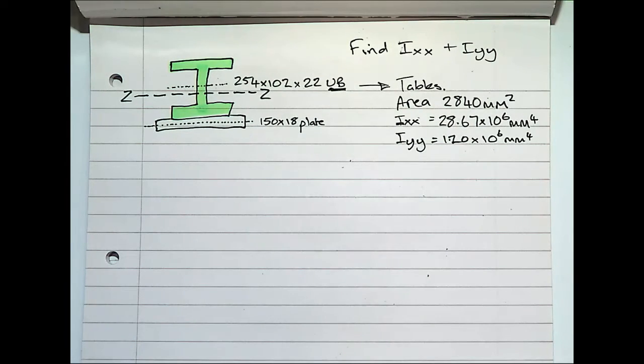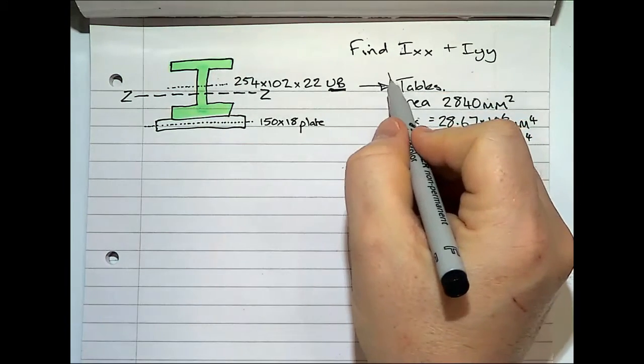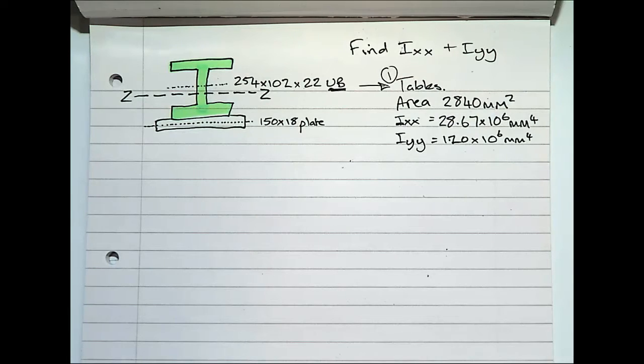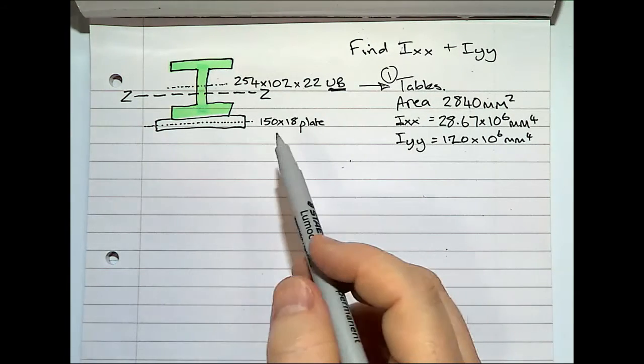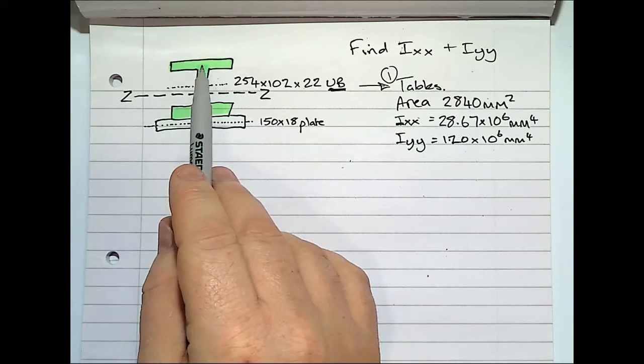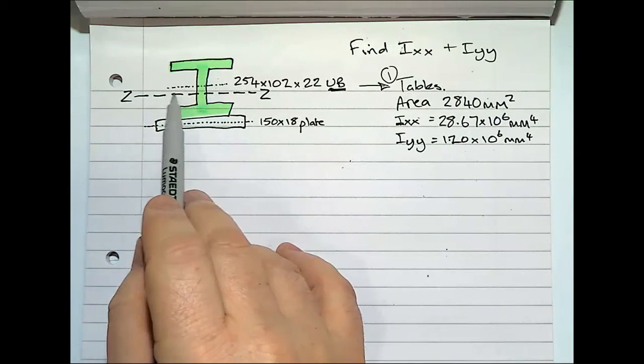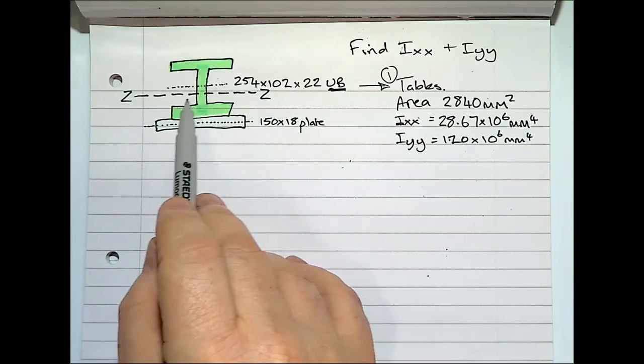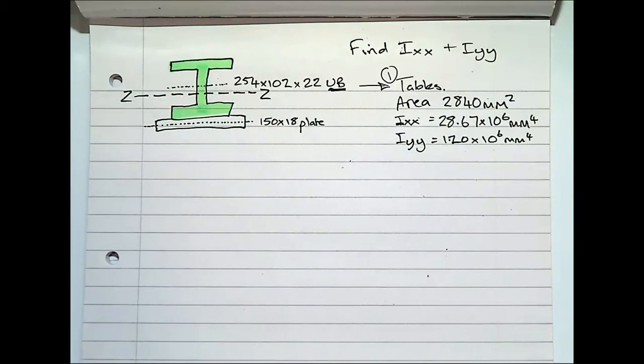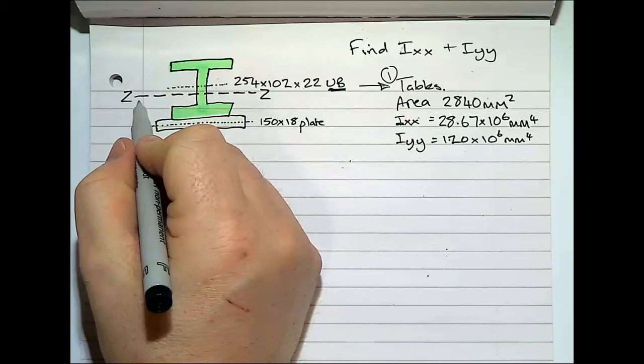What do we do first? First, you've gone to the tables to try and get all the information that you can get. You've got all the dimensions. In order to work out the second moment of area of these shapes about that location ZZ, you have to find that location ZZ.